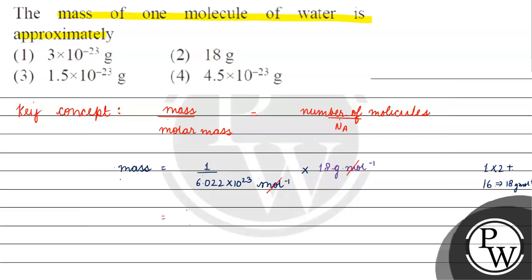So the mass equals 18 gram divided by 6.022×10²³, which gives us 3×10⁻²³ grams. The correct answer for this question is option 1. I hope you understood it well.